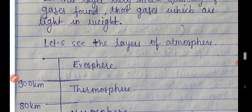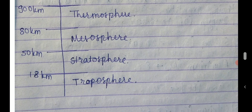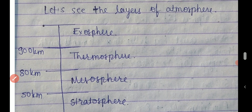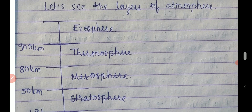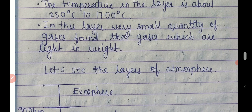Now let's look at all the layers of the atmosphere. First is troposphere, ranging up to 18 kilometers. Then stratosphere up to 50 kilometers, then mesosphere up to 80 kilometers, thermosphere up to 900 kilometers, and exosphere beyond that up to 960 kilometers. This diagram shows all the layers from ground level upward.